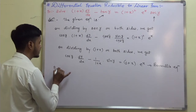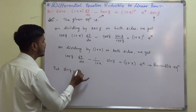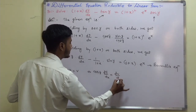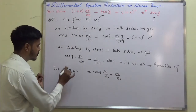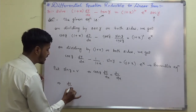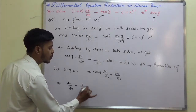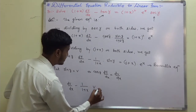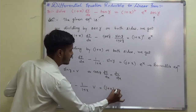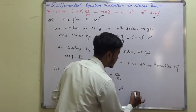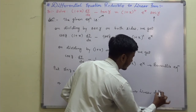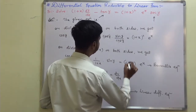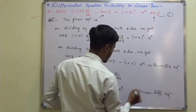So let us take the substitution: put sin(y) = v. This implies cos(y)·dy/dx = dv/dx. Making this substitution, the equation becomes: dv/dx − (1/(1+x))·v = (1 + x)·eˣ. This is a linear differential equation.